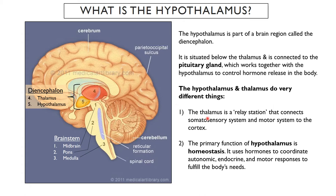Just because we have the hypothalamus and thalamus in the same area of the brain and sharing basically the same word, they are very, very different. The thalamus is a relay station that connects the somatosensory cortex to the motor system and connects sensory systems to the cortex. But the hypothalamus — its main function is homeostasis, and it does this primarily through coordination using hormones, regulating autonomic, endocrine, and motor responses to fulfill the body's homeostatic needs.